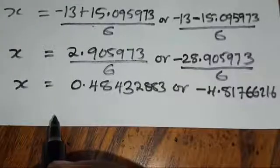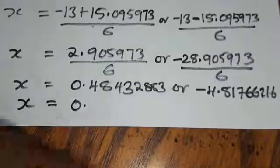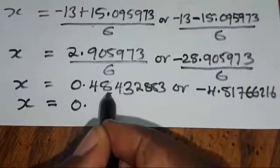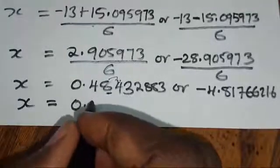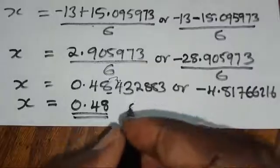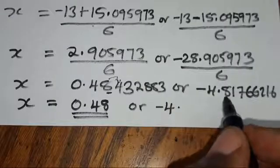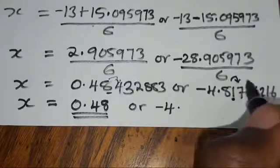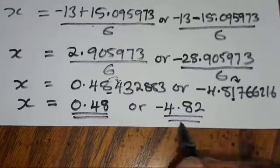Dividing the first by 6 gives positive 0.48432883, and dividing the second by 6 gives negative 4.81766216. Since they said to give answers correct to 2 decimal places: for the first value, the target digit is 4, the neighbor is less than 5, so it stays as 0.48. For the second value, the target digit is 1, the neighbor is more than 5, so it rounds up to negative 4.82. So x equals 0.48 or x equals negative 4.82.